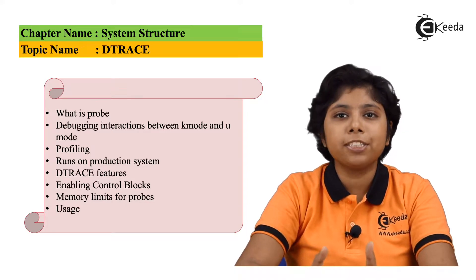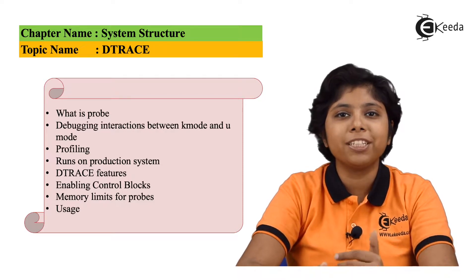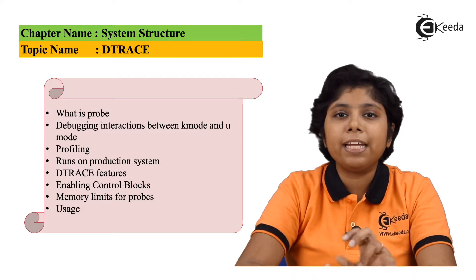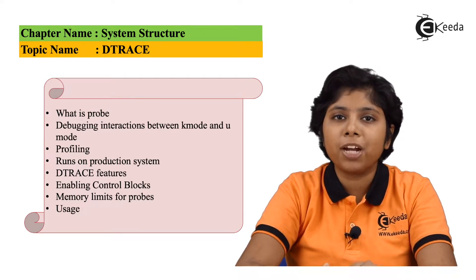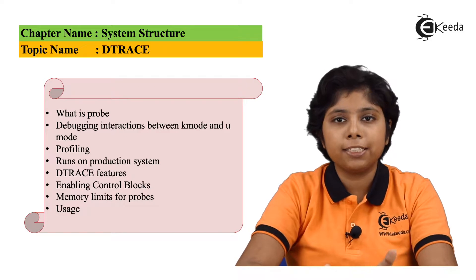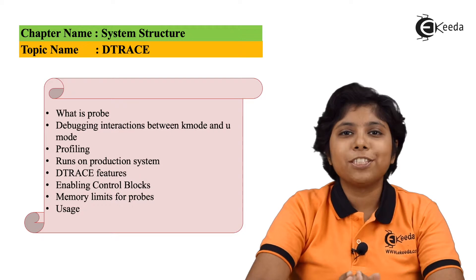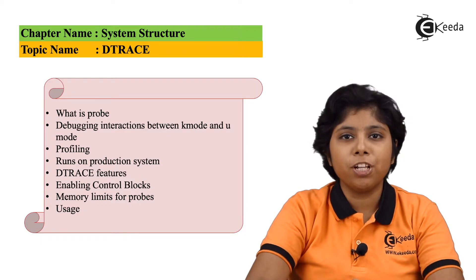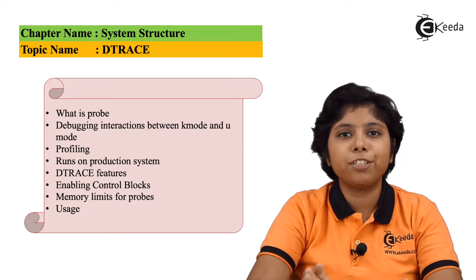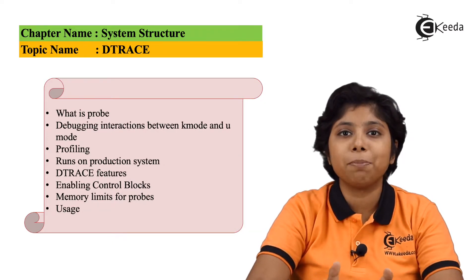Lines ending with U are performed in user mode while the lines ending with K are performed in the kernel mode. Debugging the interaction between user mode and kernel mode is nearly impossible because it requires a toolset that understands both the code and instruments interactions between them. This tool must be able to debug any area of the system, including areas that were not written with debugging in mind.